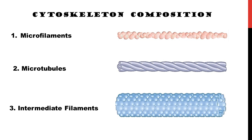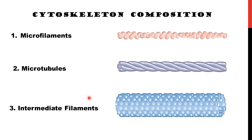The cytoskeleton composition first of all contains three elements. One is microfilament — you can see the structure here. It contains subunits that form a complex structure; it is called microfilament which is composed of actin. The second one is the microtubule, a bundle-like structure. Microtubules are the composite structure of alpha and beta tubulins. And another one is the intermediate filament. The primary division of cytoskeleton composition is microfilament, microtubules, and intermediate filament.